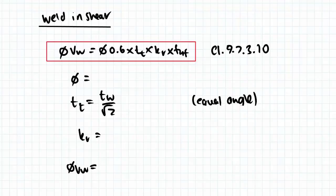The capacity is given by this equation. You can find that in clause 9.7.3.10. If you ever forget the equation, always go back to the Australian Standards.